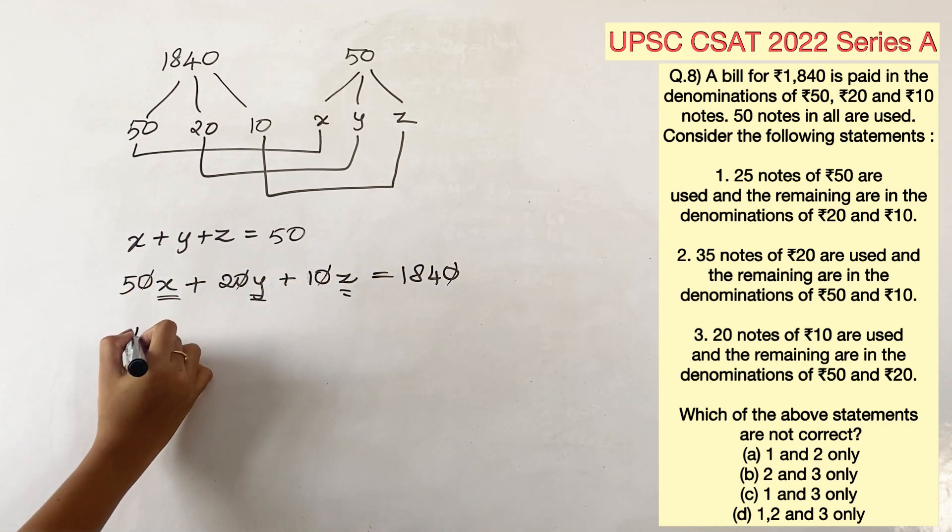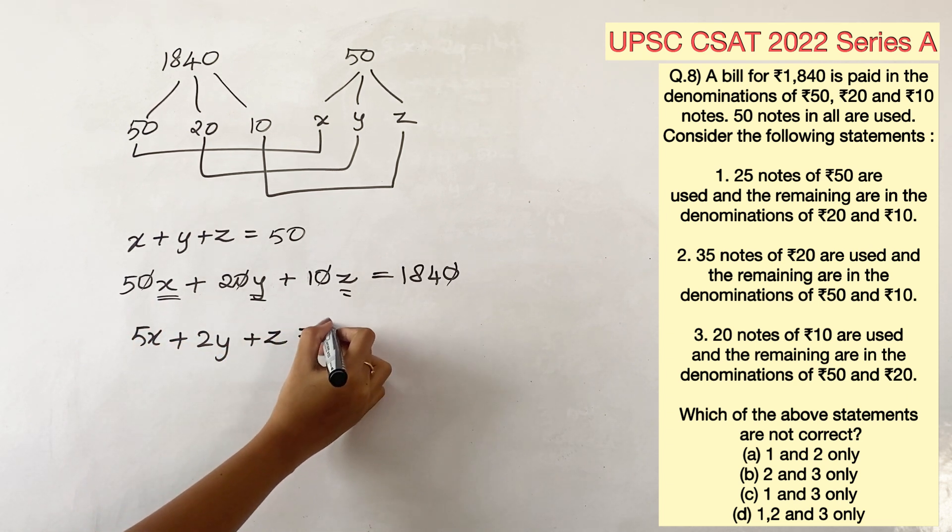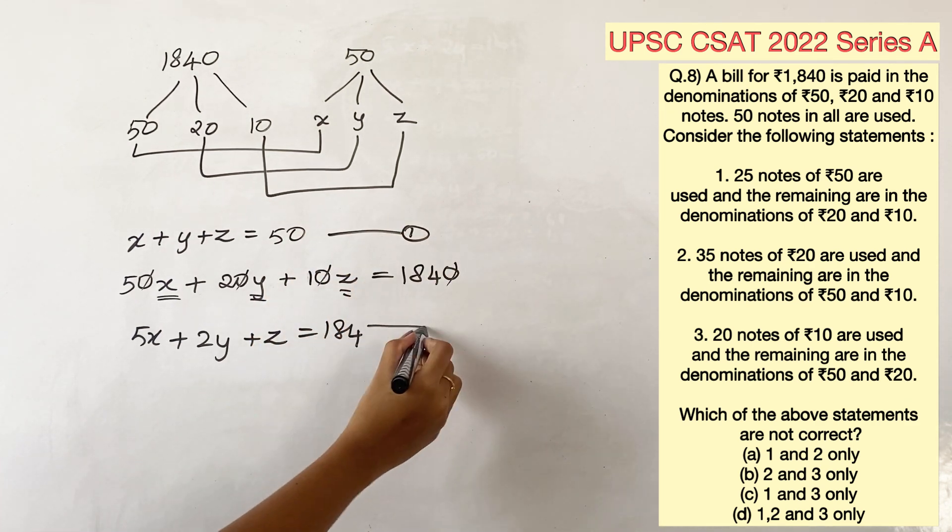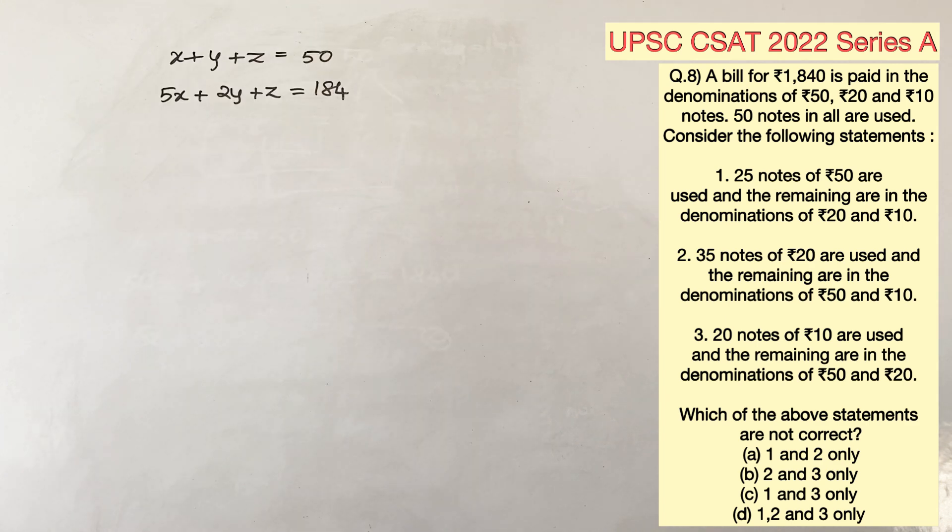We can simplify this equation by dividing it by 10. It gives us 5x plus 2y plus z is equal to 184. Let's name this equation 1 and this equation 2. Let's move on to the statements now.